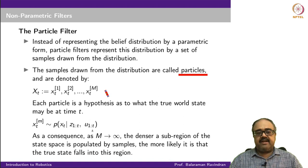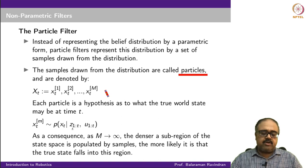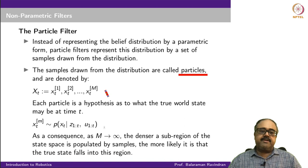As M tends to infinity — M being the number of particles maintained — the set of particles becomes a very good approximation of the underlying density. The denser a subregion of the state space is populated by samples, the more likely it is that the true state falls into that region. The particle filter represents belief as a set of samples drawn from the belief distribution, without explicitly representing it as a functional form.